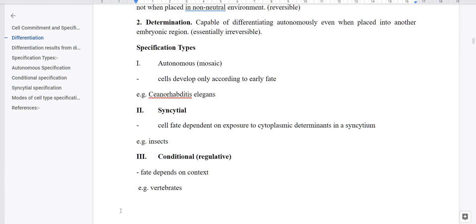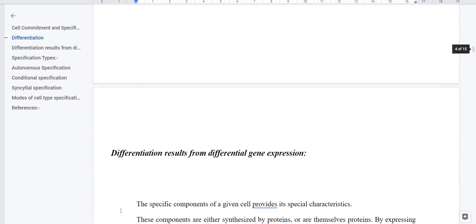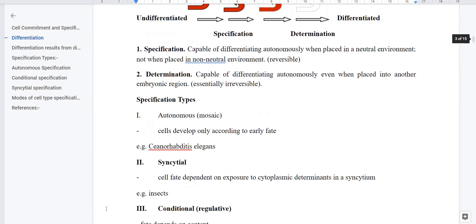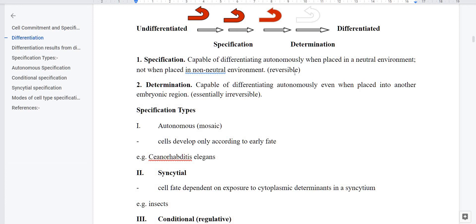These three we have already discussed: specification autonomous, syncytial, and conditional or regulative in vertebrates. Now after this step of specification and determination comes differentiation. In differentiation, genes and differentiation always depends on differential gene expression. Because in differentiation we know that particular functions are acquired in specific proteins and mRNA. So differentiation depends on differential gene expression. Now what have you learned? Specification is influenced by environment. Specification and determination is environment influenced, environmental interactions depend on what the position is. What is differentiation? That totally depends on gene expression.